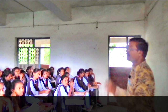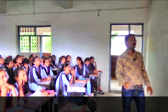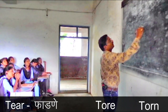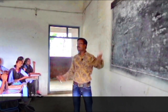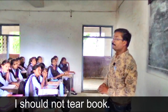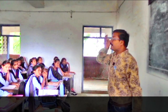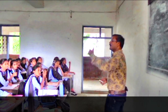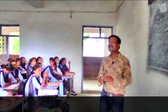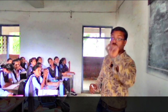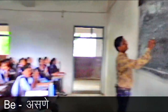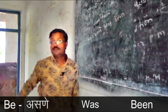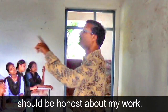I should not tear book. Tear means phadhaane, second form: tore, third form: torn. 'Maja kamaaprati pramanik asala paaije' — I should be honest about my work. Be is the first form; second form: was/were, third form: been. I should be honest about my work.